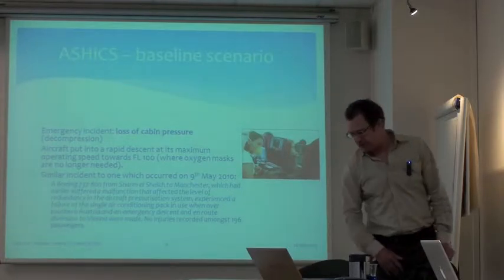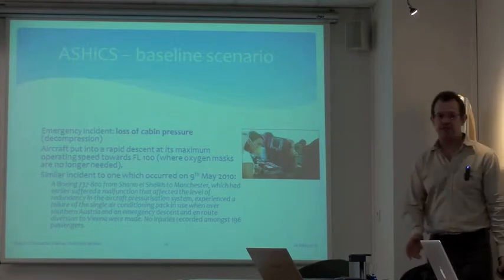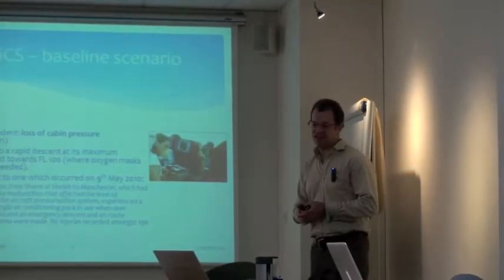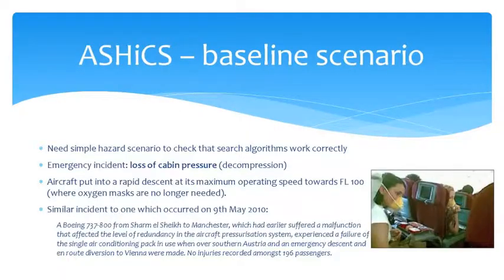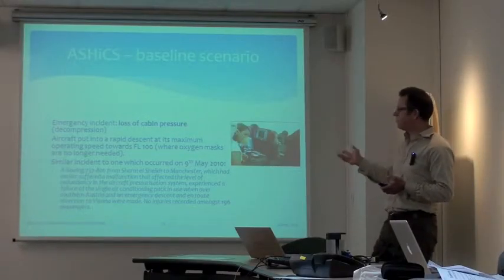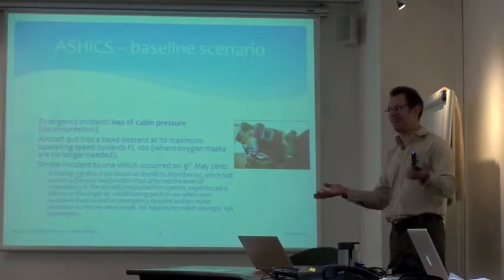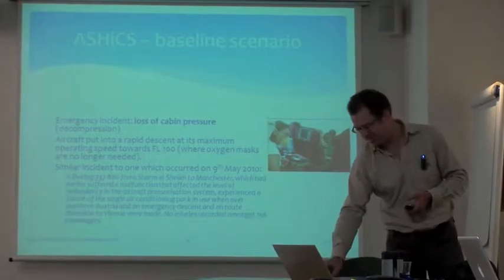The incident we chose was loss of cabin pressure, really after a brief discussion with ISA Software who said this would be the easiest to implement in RAMS. The idea is: a plane coming along at Flight Level 330, a cabin pressure incident happens, you have to do an emergency descent down to FL100 so passengers can stop using masks, and then either divert to a nearby airport or continue on your route at FL100. We allowed the plane to continue towards its destination at the lower flight level, implementing this by creating a special profile within RAMS that mimicked an emergency descent.